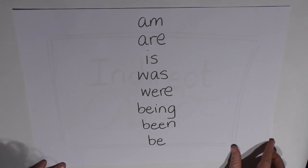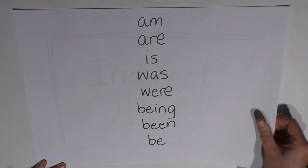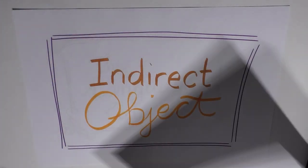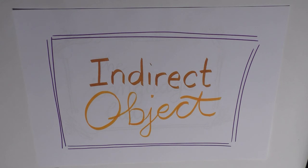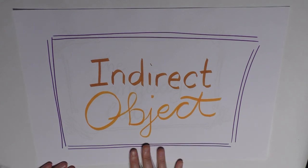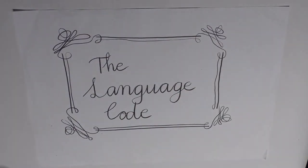That was a very short interjection, wasn't it, but about something extremely important. Our next video returns to another function of phrases and words that are found in a sentence, and that is the indirect object. So until then, thanks for watching The Language Code.